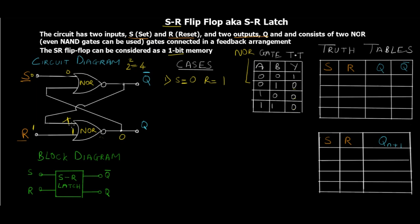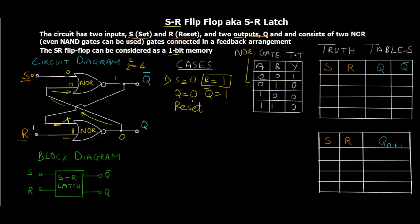That Q-bar output of 0 is fed back as input to the upper NOR gate. With S = 0 and the feedback input also 0, both inputs are 0 — which gives output Q = 1. Q and Q-bar are complements of each other, confirming a stable state. Since R = 1, this state is known as the Reset state.